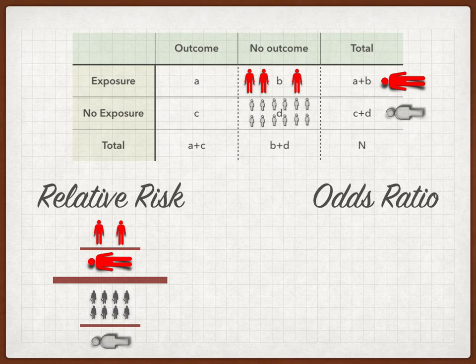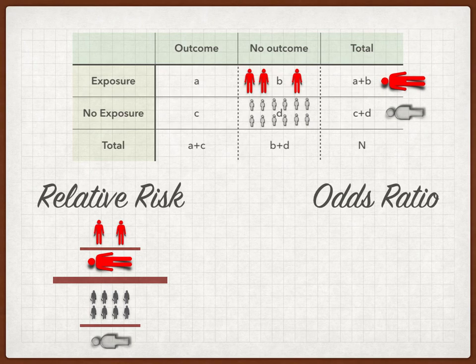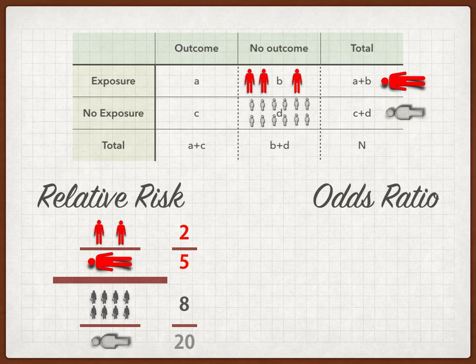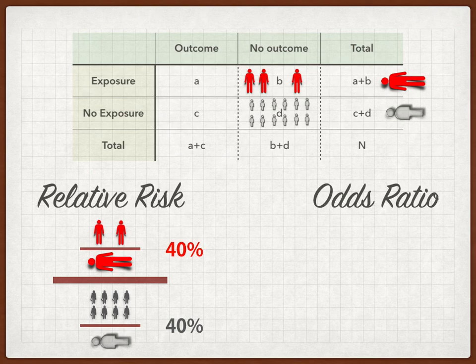We've got two ways of looking at this. We've got relative risk, where we look at the people who had the exposure and developed the outcome as a fraction of all people who had that exposure, relative to those who didn't have an exposure but still developed the outcome relative to all the unexposed people. In this case, you have a risk of 2 out of 5 if exposed, and 8 out of 20 if not — 40% and 40% — which is a relative risk of one.